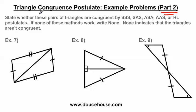The question here says: state whether these pairs of triangles are congruent by side-side-side, side-angle-side, angle-side-angle, angle-angle-side, or hypotenuse-leg postulates. If none of these methods work, write none. None indicates that the triangles aren't congruent.